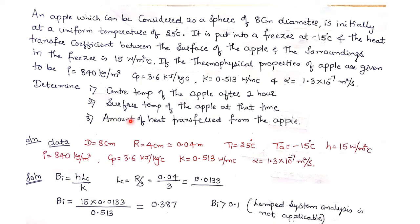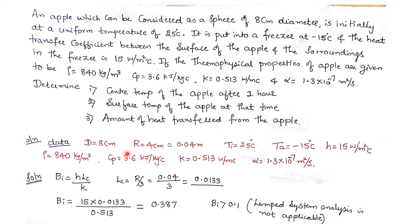Let us write the given data. Diameter d is 8 centimeter, so radius r is 4 centimeter, which is 0.04 meter. Initial temperature Ti is 25 degrees centigrade, ambient temperature Ta is minus 15 degrees centigrade, heat transfer coefficient h is 15 watt per meter square degree centigrade, density is 840 kg per meter cube, specific heat Cp is 3.6 kilo joules per kg degree centigrade, thermal conductivity k is 0.513 watt per meter degree centigrade, and thermal diffusivity alpha is 1.3 into 10 to the power minus 7 meter square per second.